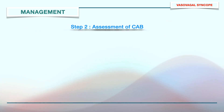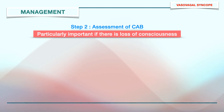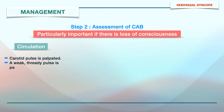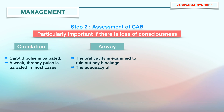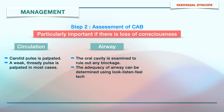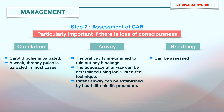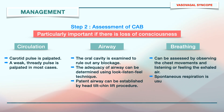Step 2 is assessment of circulation, airway, and breathing, which is particularly important if there is loss of consciousness. To check circulation, the carotid pulse is palpated — a weak, thready pulse is palpable in most circumstances. For airway, the oral cavity should be examined to rule out any blockage, and the adequacy of the airway can be determined by the look-listen-feel technique. A patent airway is successfully established by the head-tilt-chin-lift procedure. Breathing can be assessed by observing chest movements and listening or feeling the exhaled air. Spontaneous respiration is usually evident during syncope.